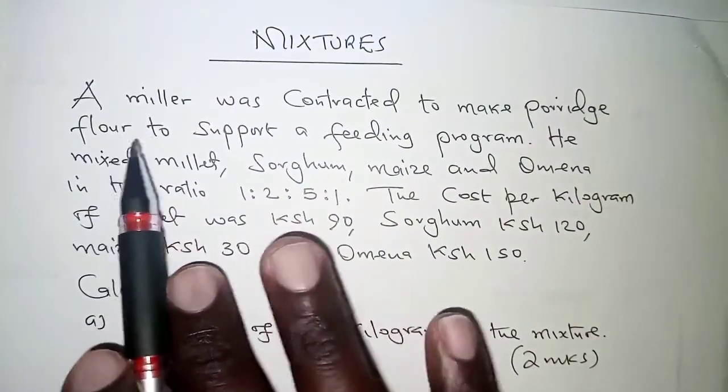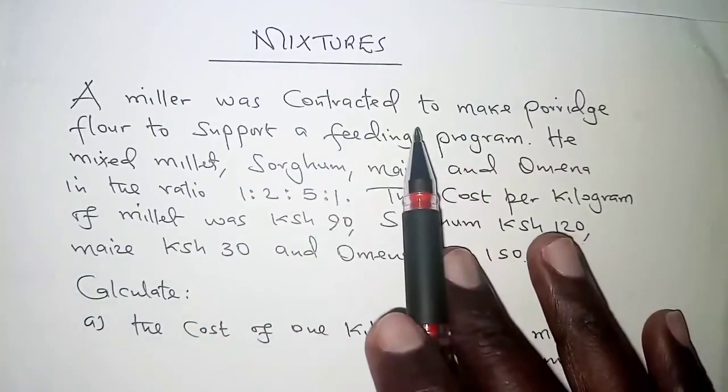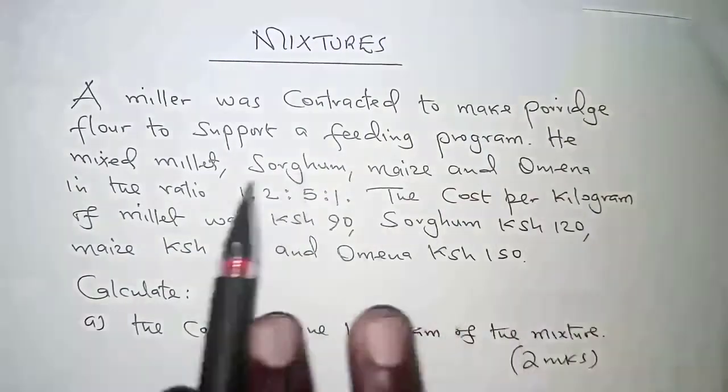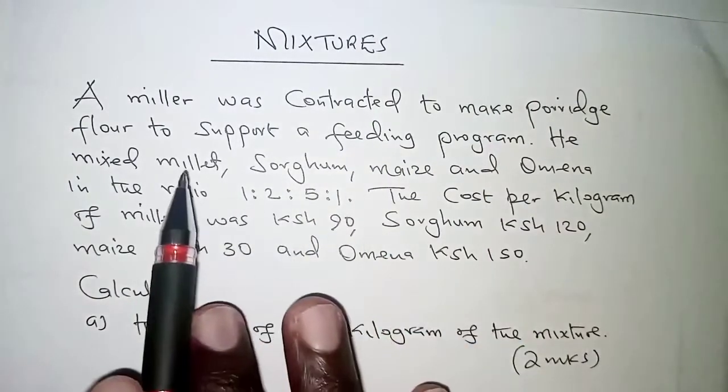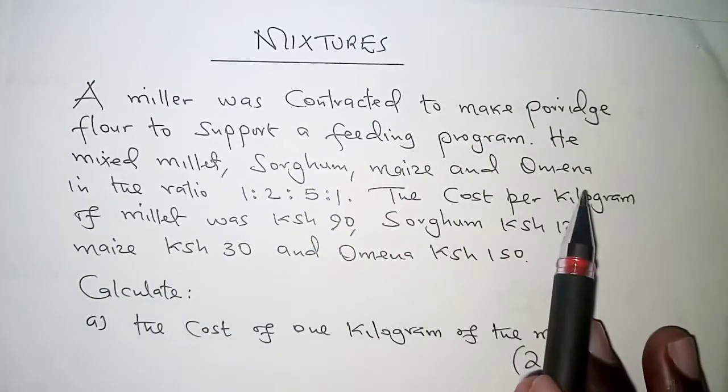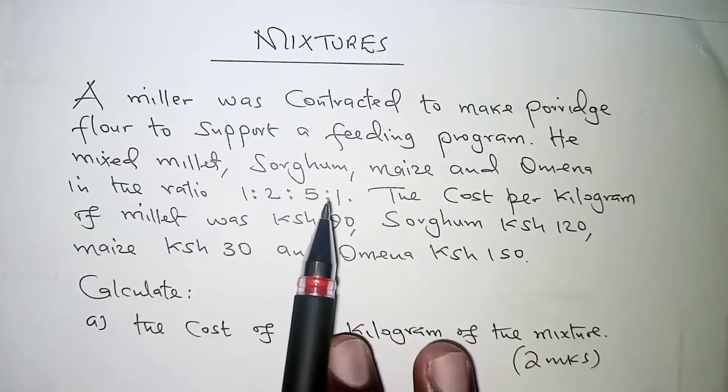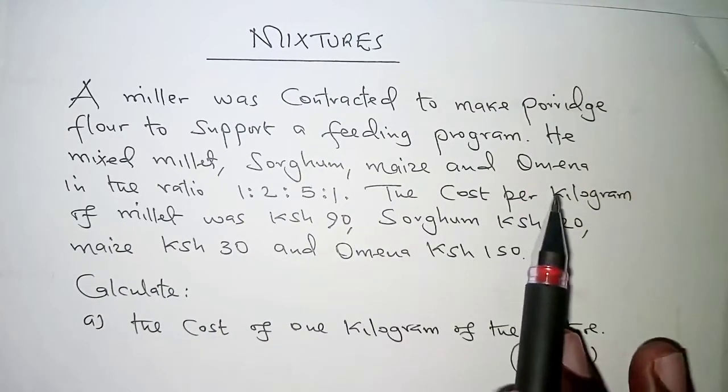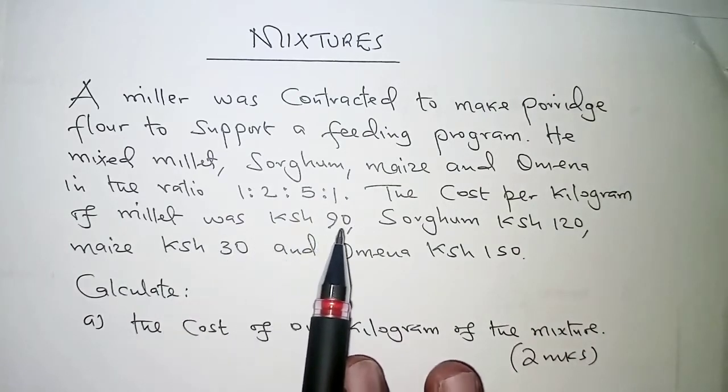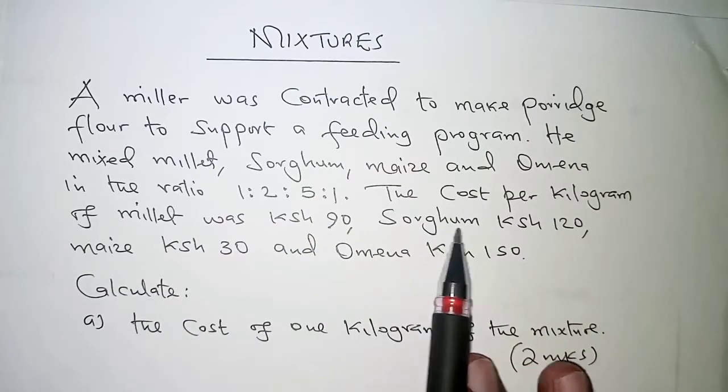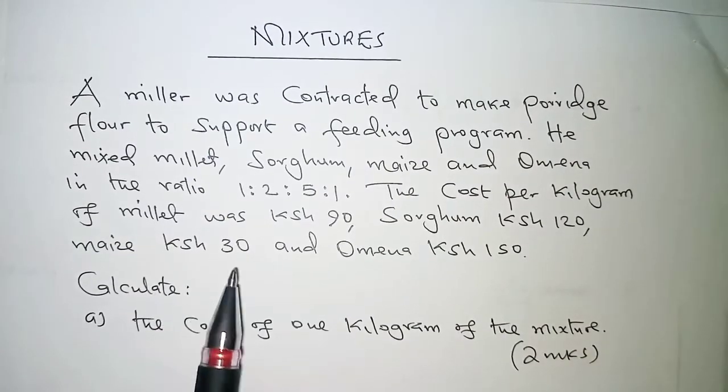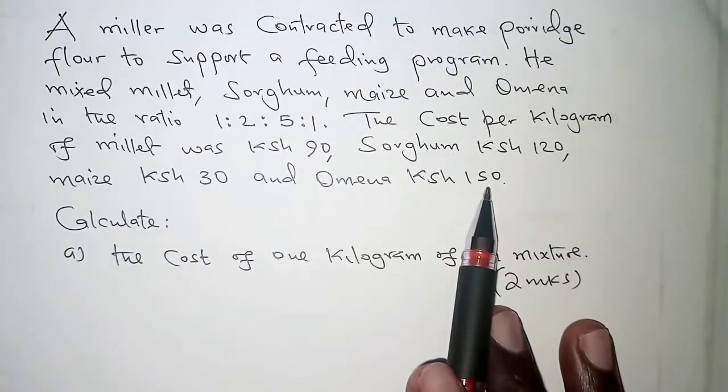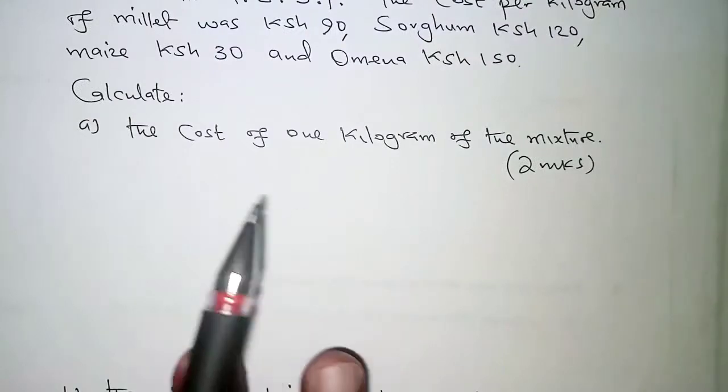And the question we have here is about mixtures. It reads: a miller was contracted to make porridge flour to support a feeding program. He mixed millet, sorghum, maize, and omena in the ratio 1 to 2 to 5 to 1. The cost per kilogram of millet was 90 shillings, sorghum 120 shillings, maize 30 shillings, and omena 150 shillings.